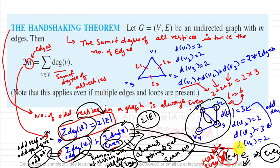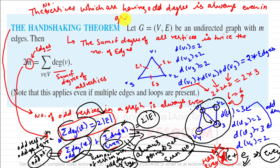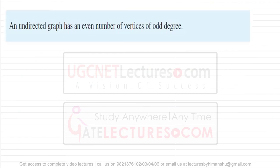This is an important result: it can never be odd. The number of vertices which are having odd degree is always even in graphs. This is the handshaking theorem — the undirected graph has an even number of vertices of odd degree, which we have just proved.